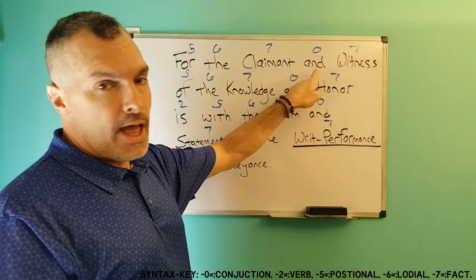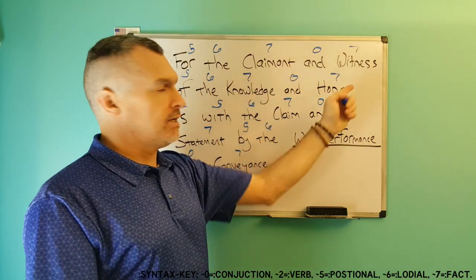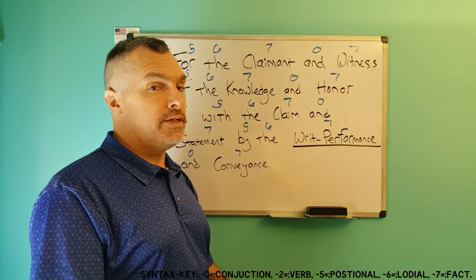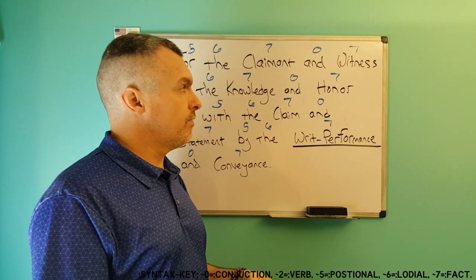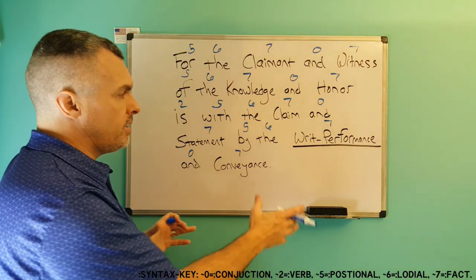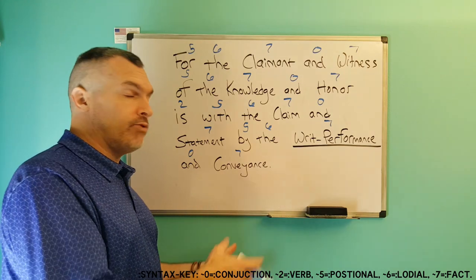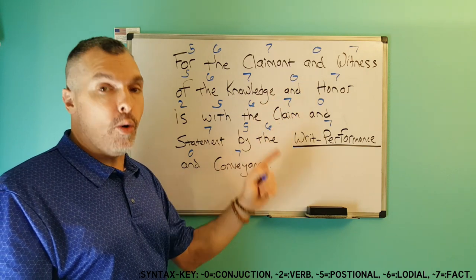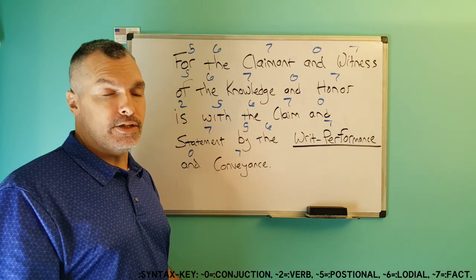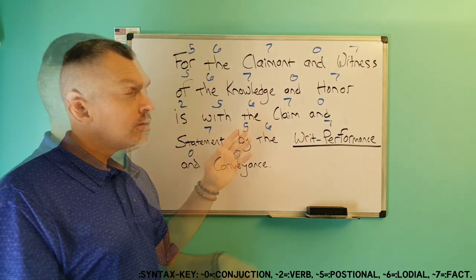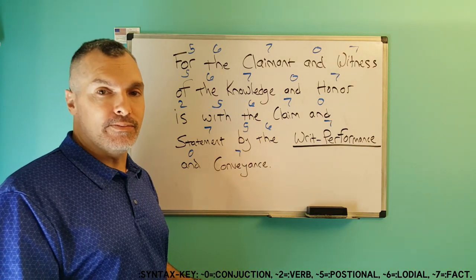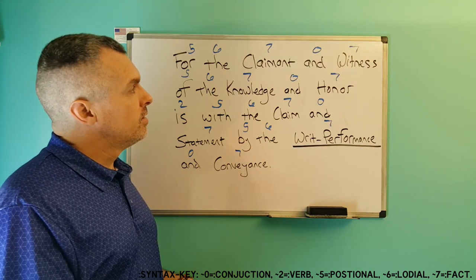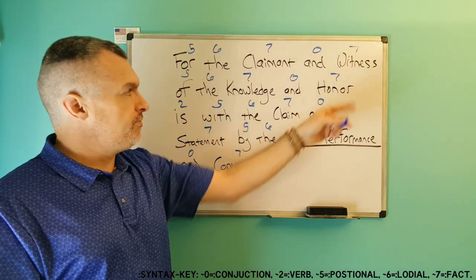The conjunction acts as a bridge between facts. The conjunction is neutral — it is not modified and it does not modify. Therefore, if you look at any grouping of words, whether it's correct sentence structure or whether it's plain English, if you see an 'and' or an 'or' — which are the only two conjunctions in the language — you can put a zero above them because they are a conjunction and they will always be a conjunction. They're just a bridge in the correct sentence structure between facts.